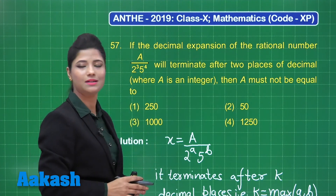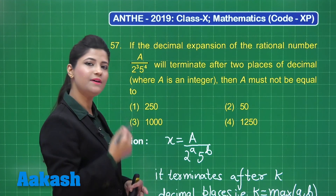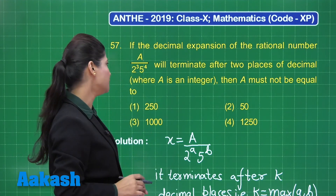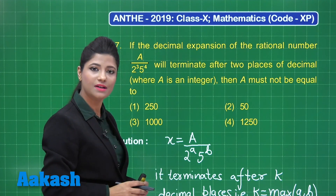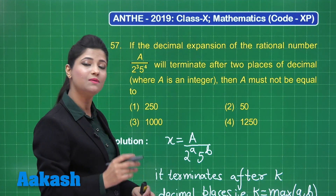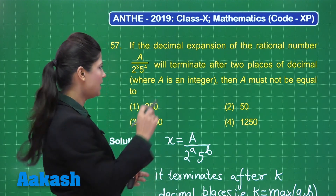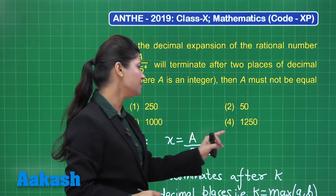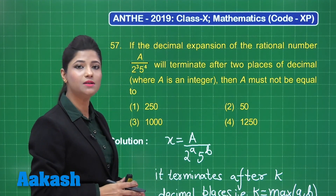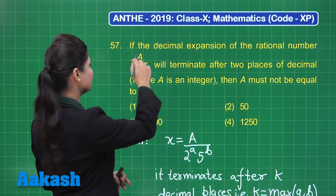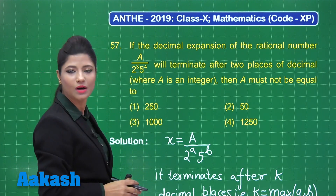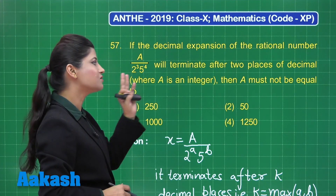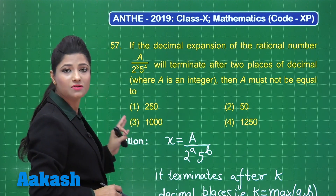Option 3 is 1000, expressed as 2³ × 5³. Substituting A = 2³ × 5³ reduces the number to 1/5, leaving only 5¹ in the denominator. This means it terminates after only 1 decimal place, violating the given condition — so 1000 cannot be A. Option 4 is 1250, which simplifies as 2 × 5⁴. Substituting gives 1/2², which terminates after 2 decimal places — justified. Only option 3 must NOT be equal to A.